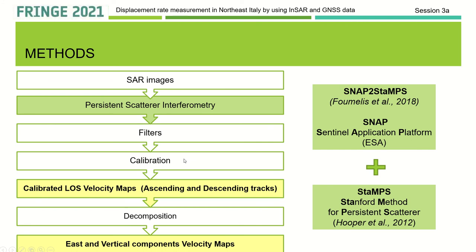Calibration was performed using GNSS data. In particular, we projected their velocity along the line of sight and then estimated an offset and a linear ramp in order to remove the orbital ramps and the residual atmospheric effects. At the end, we obtained two calibrated LOS velocity maps in ascending and descending tracks, and after decomposition, two velocity maps in east-west and vertical directions.